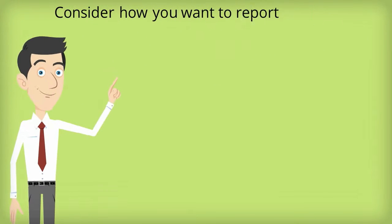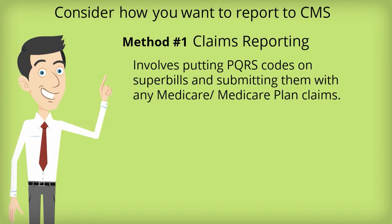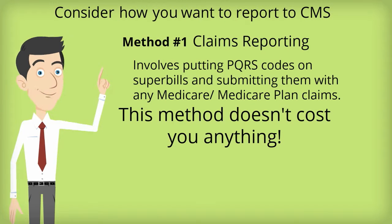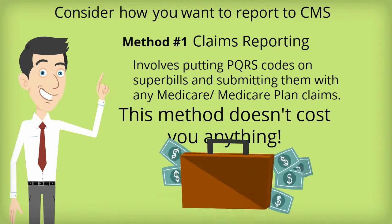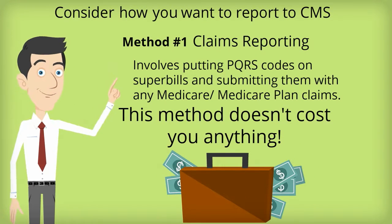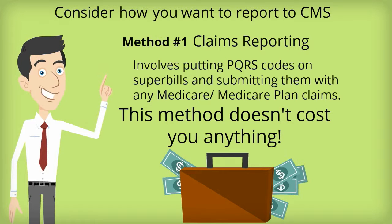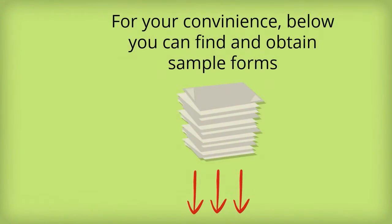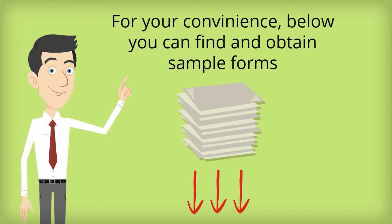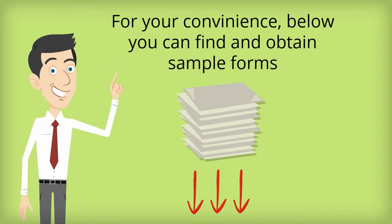You'll want to consider how to report. Claims reporting is probably the most basic method of reporting you could use, and simply involves putting PQRS codes on super bills and submitting them with any Medicare or Medicare plan claims. You'll need at least 9 measures to report this way. I like to recommend this method because it requires just as much effort as any other method, but doesn't cost you anything extra. We've set up a few sample forms for your reference which you can purchase through the link below.